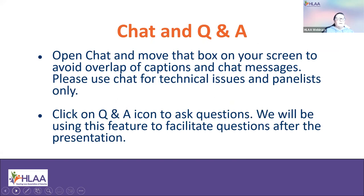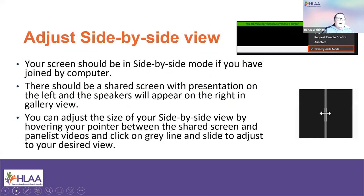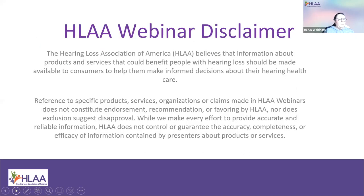If you've joined by computer, your presentation should be in side-by-side mode. This will allow your slides to be on the left and the panelists on the right in a gallery view. You can change the size of your side-by-side view by hovering between the two screens and moving the gray bar to adjust your desired size. If you've joined by mobile device or phone, your view may be slightly different and you may have to scroll between the views.